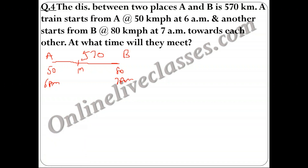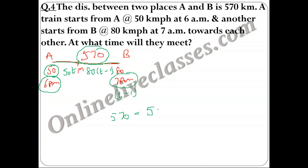Let the trains meet t hours after 6 a.m. The first train (50 km/hr) travels a distance of 50t. The second train starts 1 hour later, so it travels for (t − 1) hours, covering 80(t − 1) km. Total distance: 50t + 80(t − 1) = 570. Solving: 130t − 80 = 570, so 130t = 650, giving t = 5 hours.